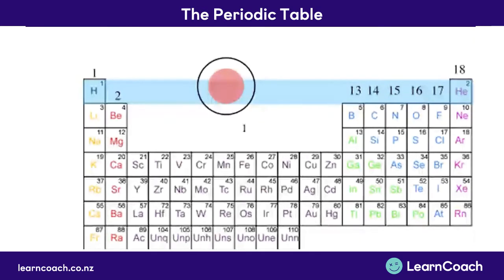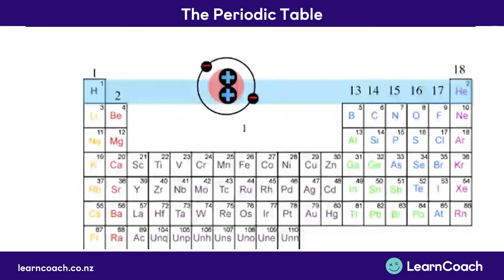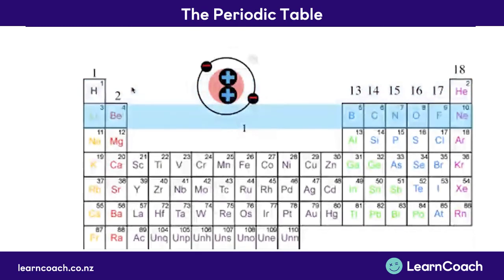Here's our atom. With one proton and one electron we have hydrogen. Now helium has two protons and two electrons, and the first shell has been filled. So we move on to the second row now, which shows the second electron shell.